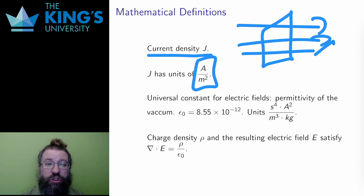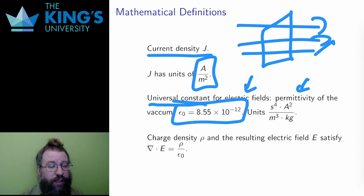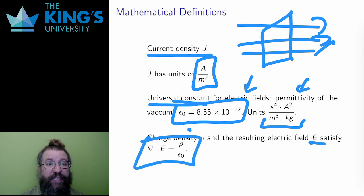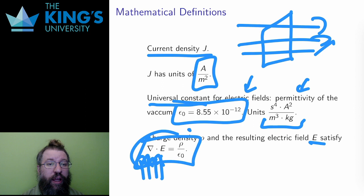There is a universal constant which determines the strength of the interaction due to electric fields. This constant is called the permittivity of the vacuum and has the value ε₀ = 8.85 × 10⁻¹² with units s⁴A²/(m³kg). If a charge density ρ is creating an electric field, the relationship between the charge density and the field is given by the divergence differential operator: ∇·E = ρ/ε₀, and that's why we needed all these things defined including ε₀ to write down this differential operator and this differential equation.